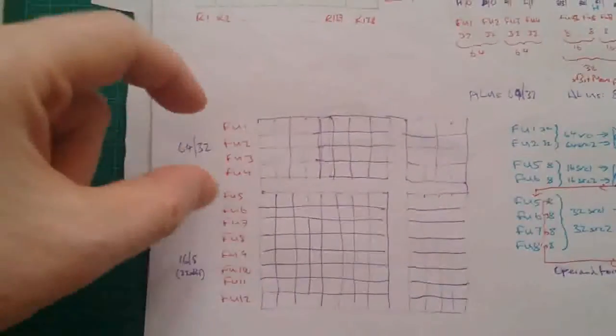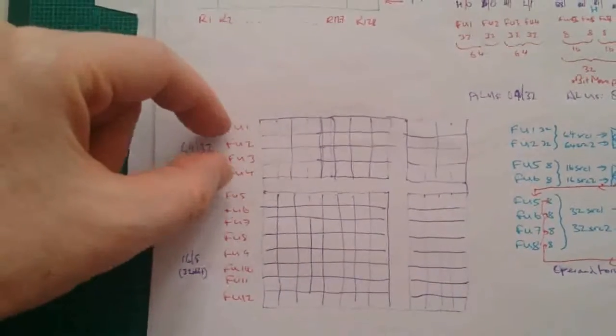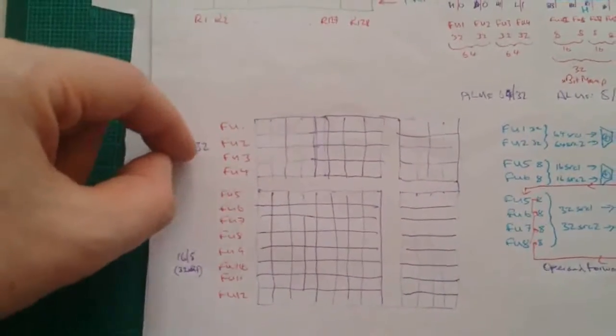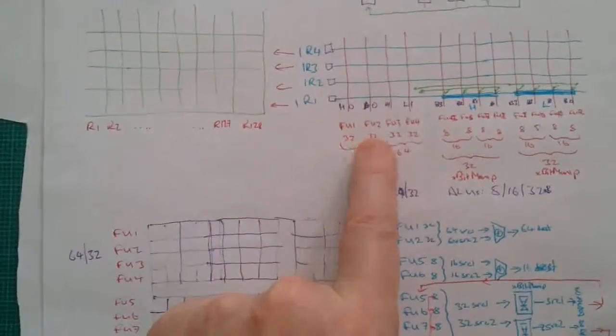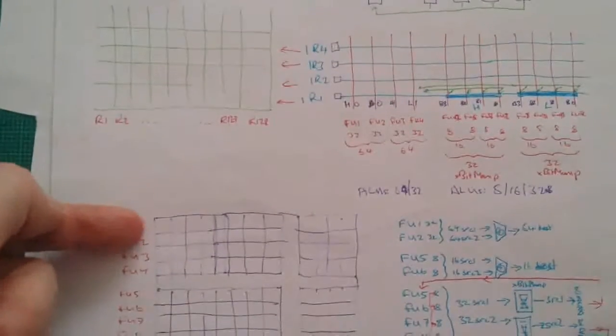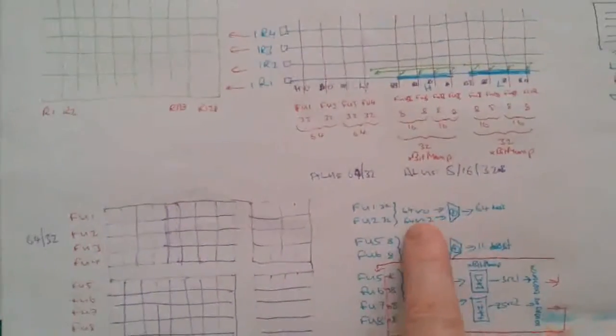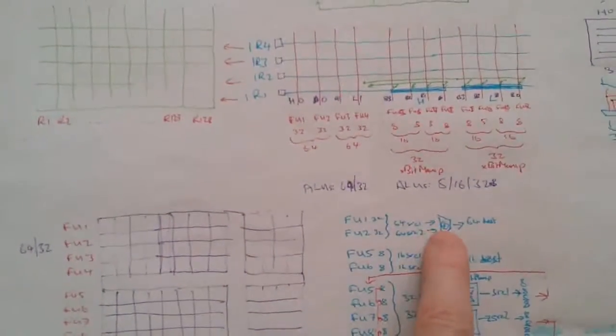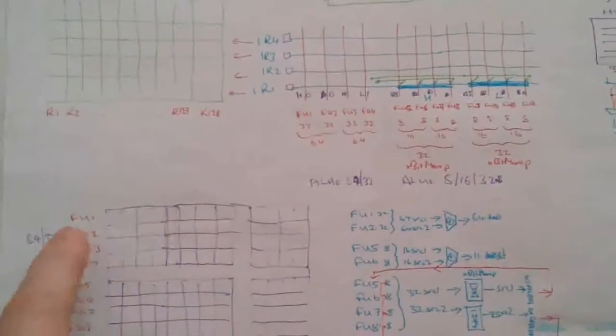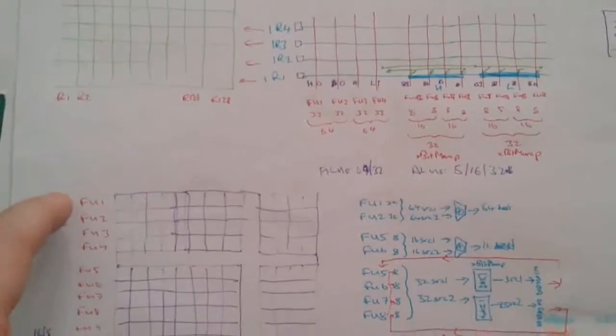So the augmentations that we've got here is that we have function units which are dedicated to 64 and 32-bit. You can see that the pairs of 32-bit function units give both their pairs of source operands to 64-bit ALUs.